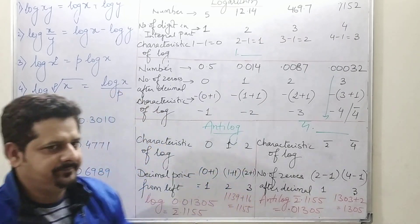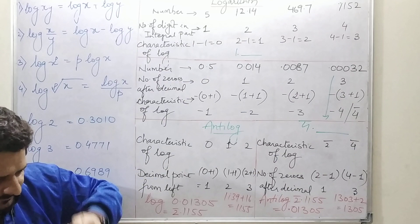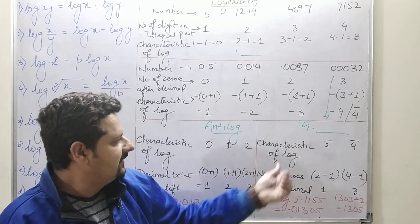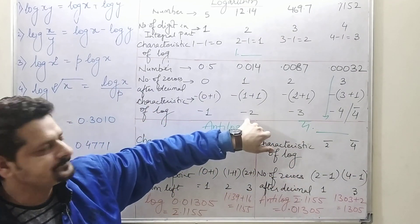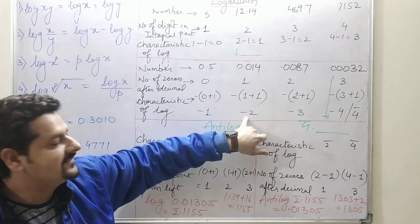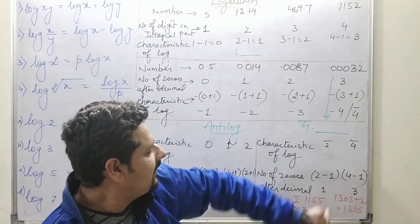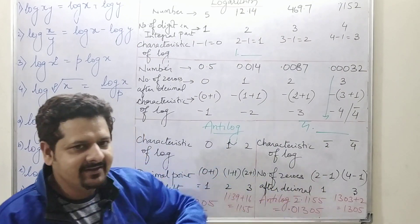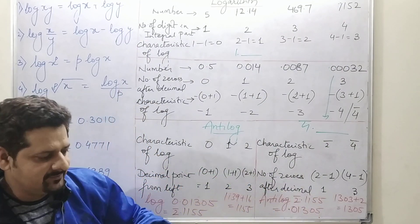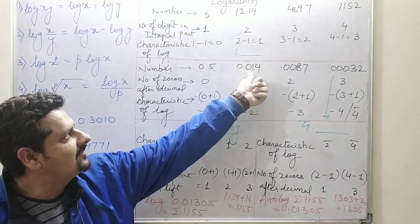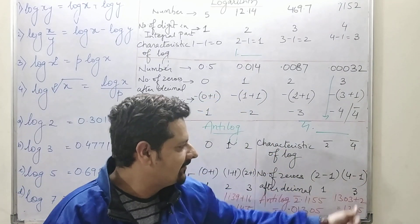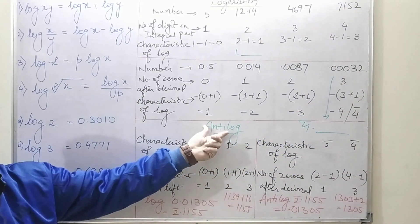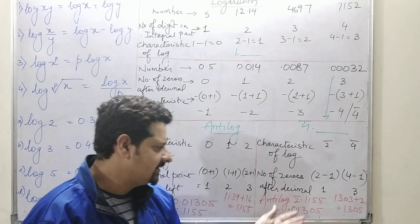If the characteristic is 1, you place the decimal after two digits from the left; if it is 2, after three digits. For a negative characteristic like 2̄, you calculate 2 − 1 = 1, so you place one zero after the decimal point. For 4̄, you place three zeros after the decimal. This is how you go for antilog.